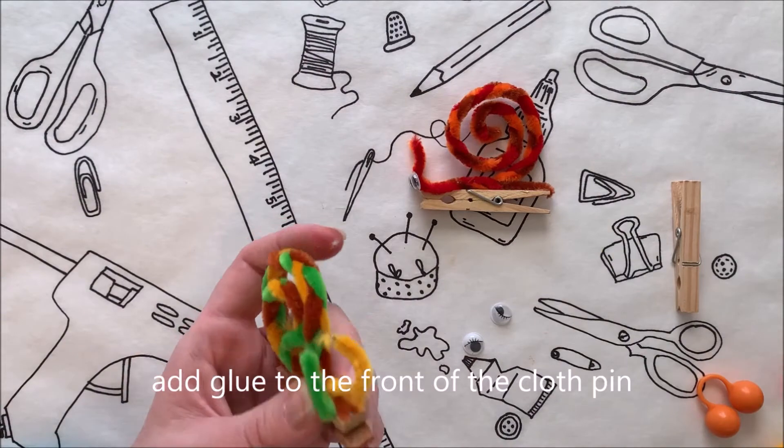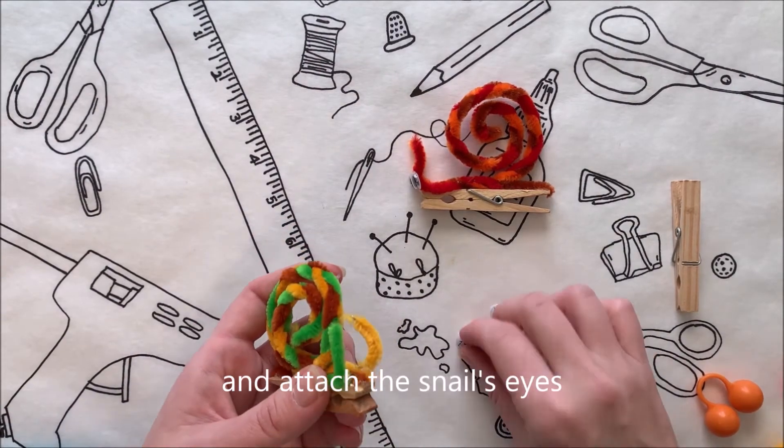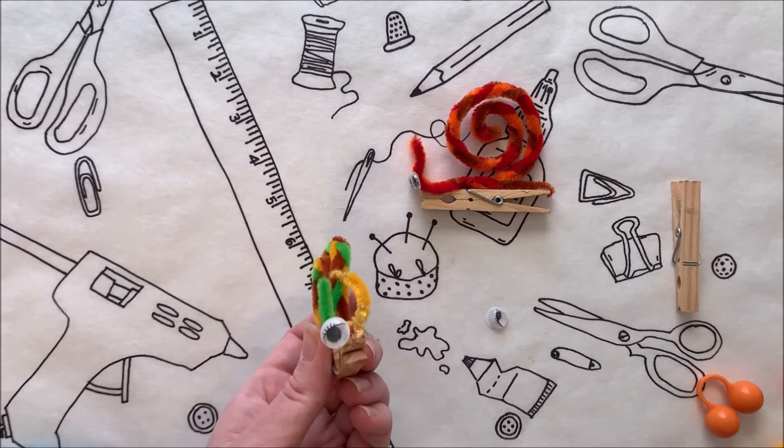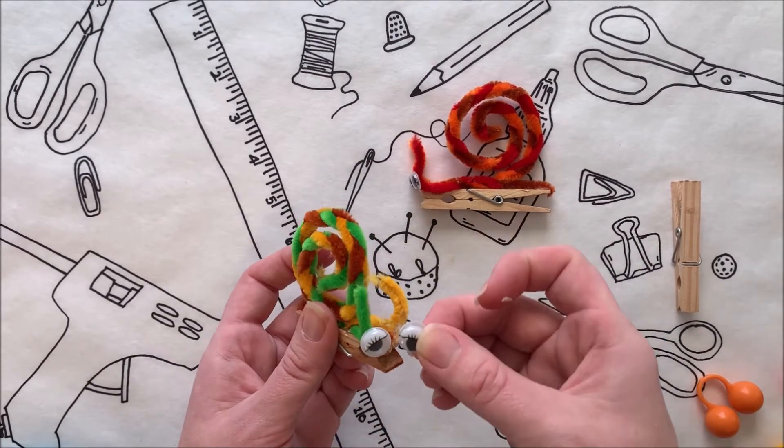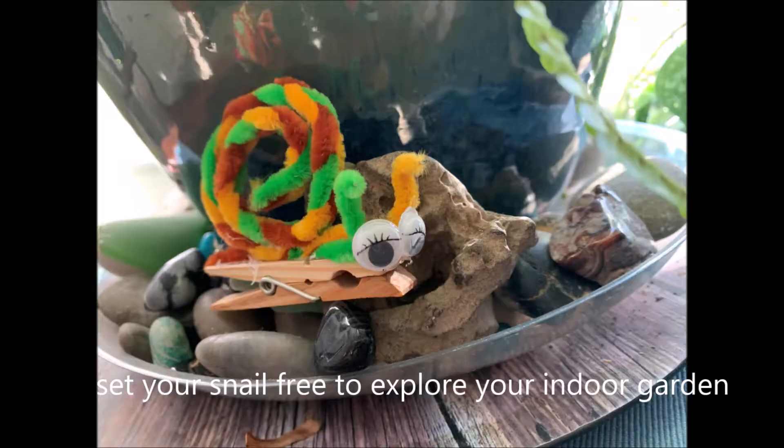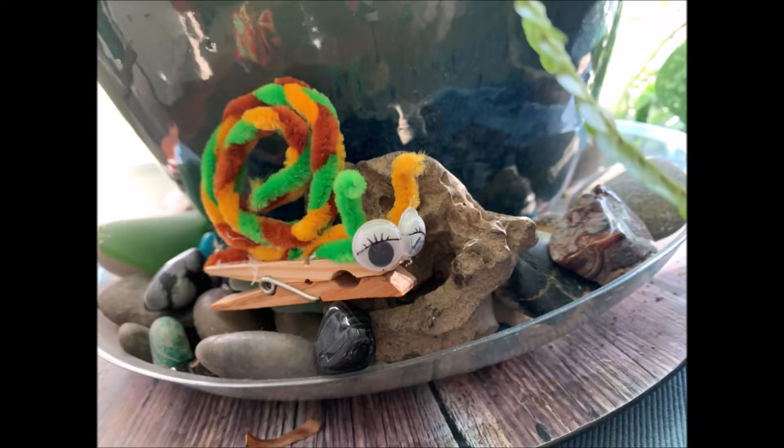Now for the googly eyes. Add glue to the front of the clothespin and attach the snail's eyes. Hello new friend. Set your snail free to explore your indoor garden.